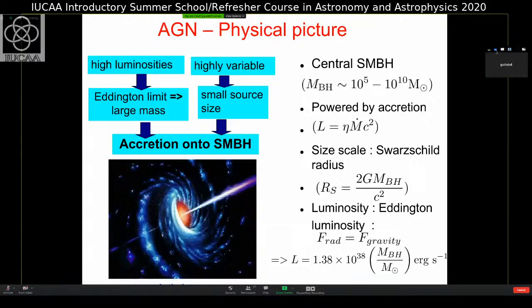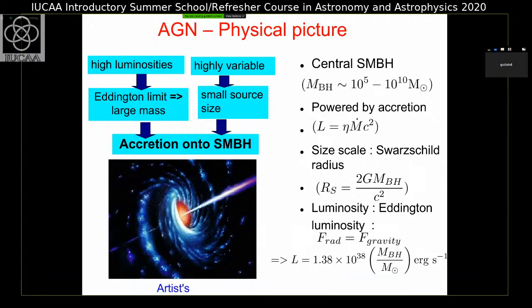Let's start. This is Gulab Devangan. I will continue my lecture on active galactic nuclei. In my last lecture, we were on this slide. AGN have very high luminosity in the range of 10^42 to 10^47 ergs per second. These large luminosities lead to huge masses, more than about a million solar mass. The rapid variability time scale suggests this mass must reside in a very compact size, smaller than the size of the solar system.